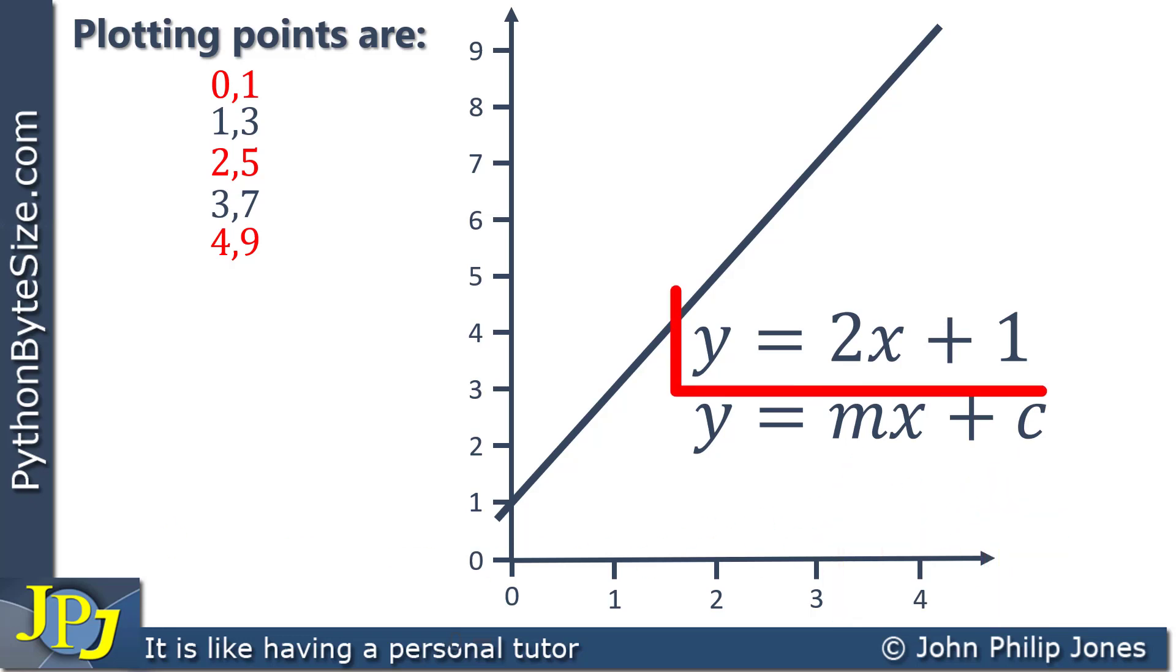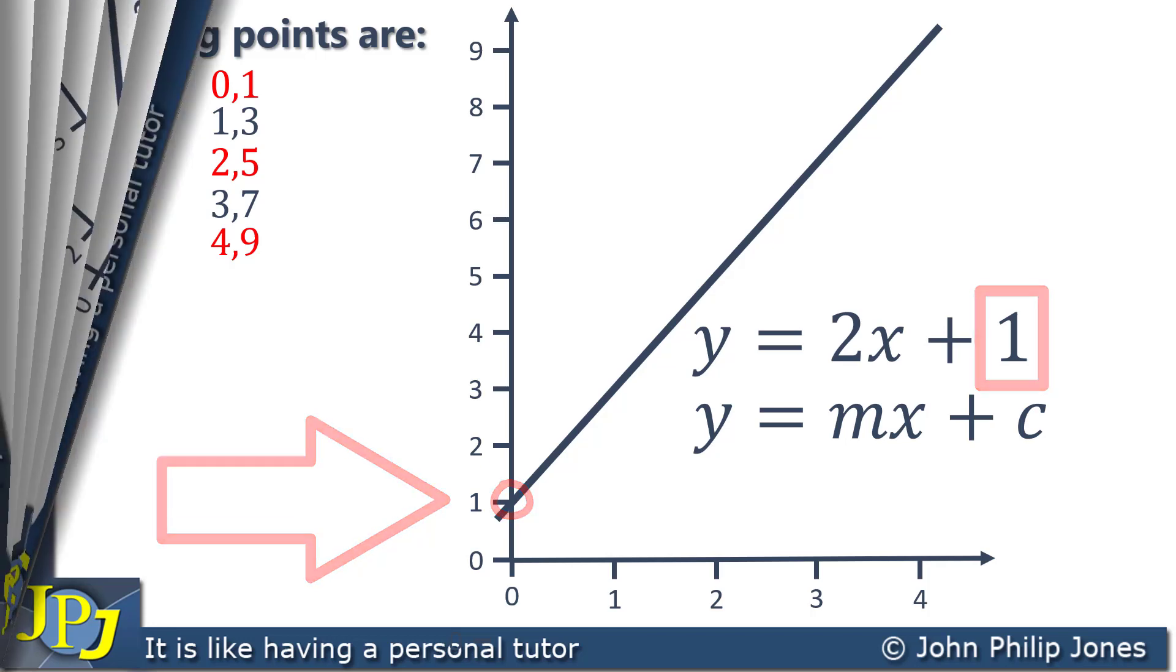Now in the case of this, the slope is 2 and the 1, well, that's where it crosses the y-axis, which you can see here is at position 1. And that's when x is 0. When x is 0, you see where the line crosses the y-axis, and that's the constant. Now we'll come on to look at more details with respect to a straight line graph as we move through the series of videos.